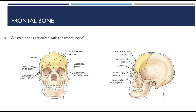Within the squamous portion we have the glabella, which is a smooth raised prominence right between the eyebrows. We have the supraorbital groove, which is the slight depression above each eyebrow. The supraorbital margin (SOM) is the superior rim of each orbit. Lastly, the supraorbital foramen is a small hole within the supraorbital margin through which the supraorbital nerve and artery pass.